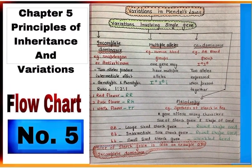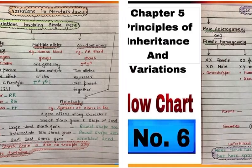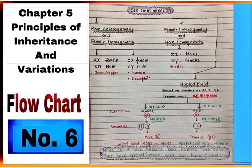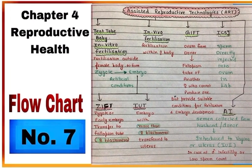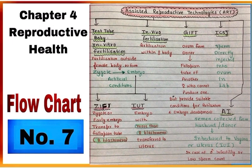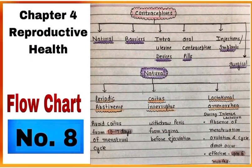Flowchart number five is about variations in Mendel's laws. Flowchart number six is showing sex determination in different organisms. Flowchart number seven is from chapter four, Reproductive Health — it is about various assisted reproductive technologies.